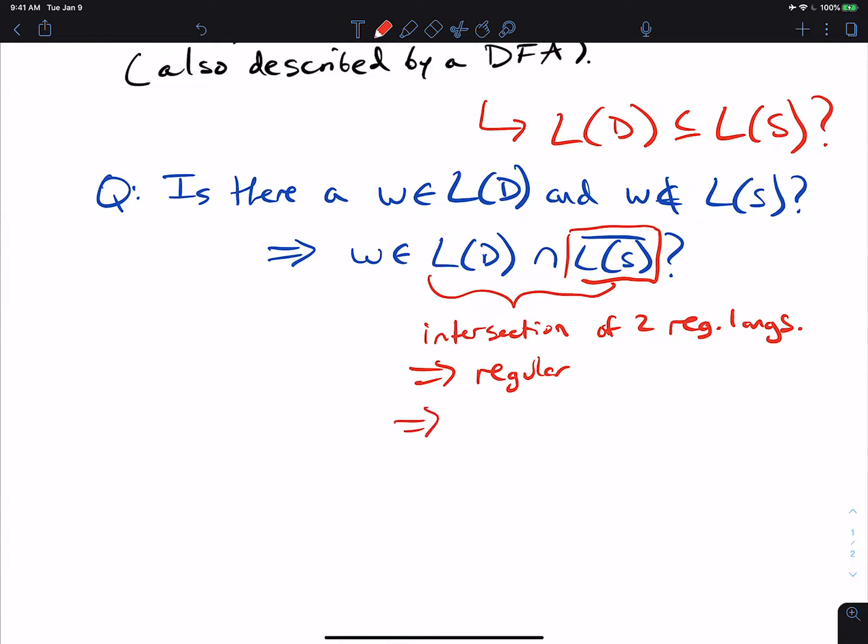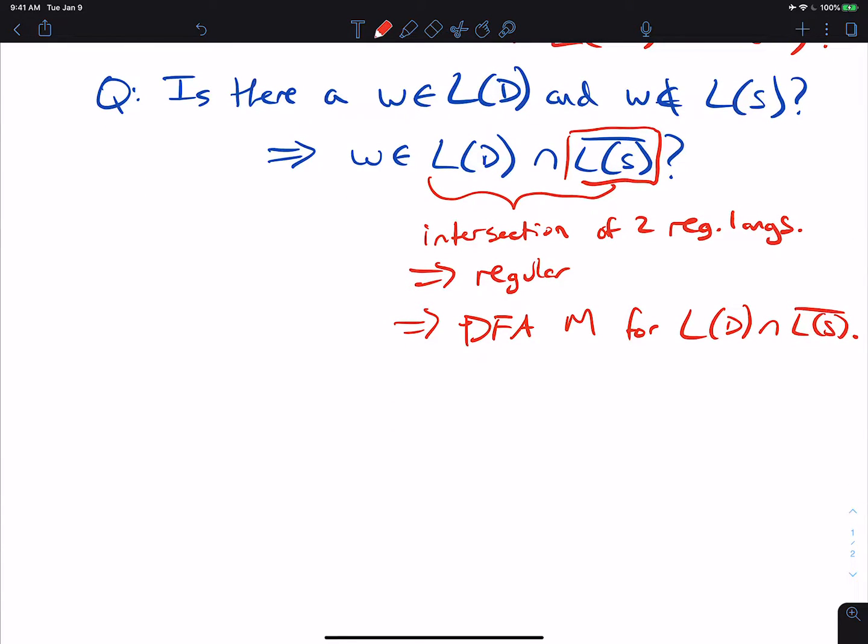So that means there is a DFA. Let's call it M for L of D intersection L of S complement. And then the real question from this is, well, if we can make this DFA M, which we can because we can just use the product construction. So then is there a string W in the language of M?